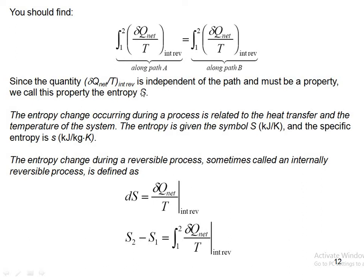We call this property entropy, denoted by S. The entropy change occurring during a process is related to the heat transfer and the temperature of the system. The symbol is S, with units of kJ/K, and specific entropy is kJ/(kg·K). Therefore dS = δQ_net / T for an internally reversible process, or equivalently S₂ − S₁ = ∫₁² (δQ_net / T) for an internally reversible process.